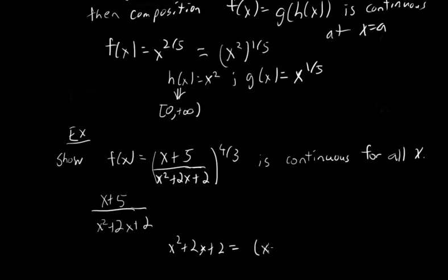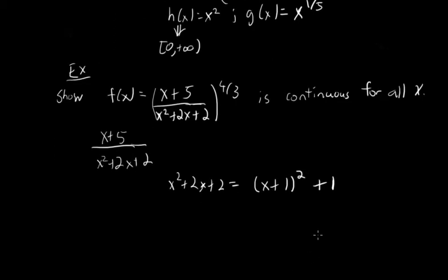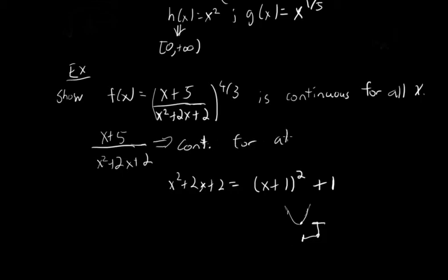We can complete the square and write this as the quantity x plus 1 squared, plus 1. This is a parabola with vertex at negative 1, 1, and it opens upward. So it's never going to cross the x-axis — it will always be positive and will never equal 0. Therefore, this denominator will never equal 0, and this rational function is going to be continuous for all values of x.